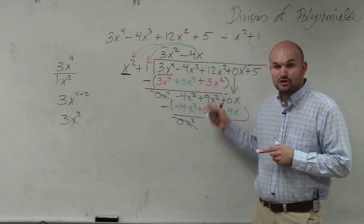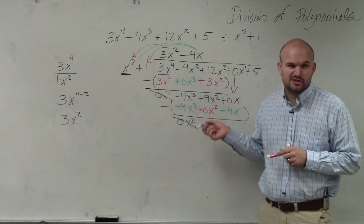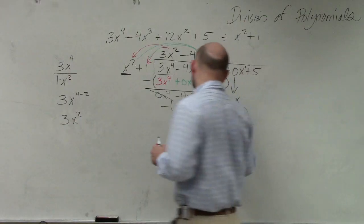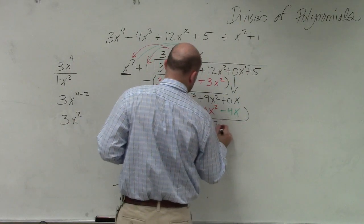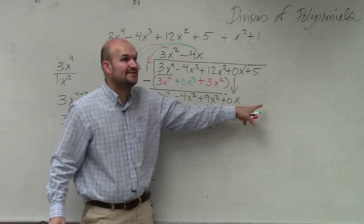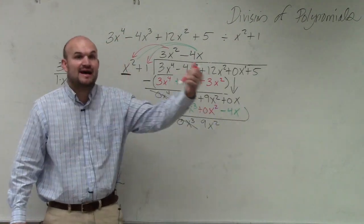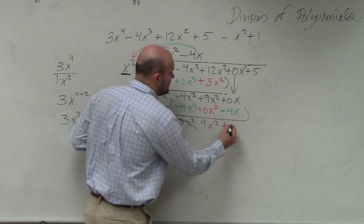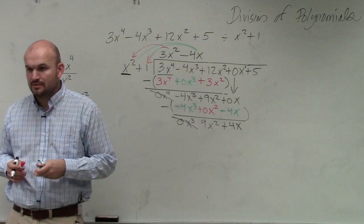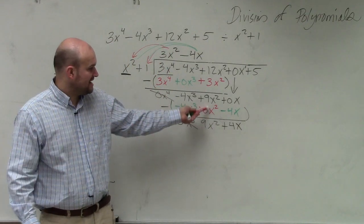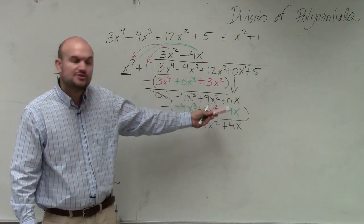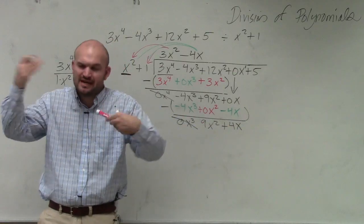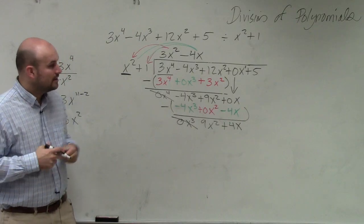Since I included this place value, it's much easier to understand the subtraction. 9x squared minus 0x squared is 9x squared. And then 0x minus a negative 4x — when you minus a negative, that is the same as adding — so 0x minus negative 4x gives you a positive 4x.